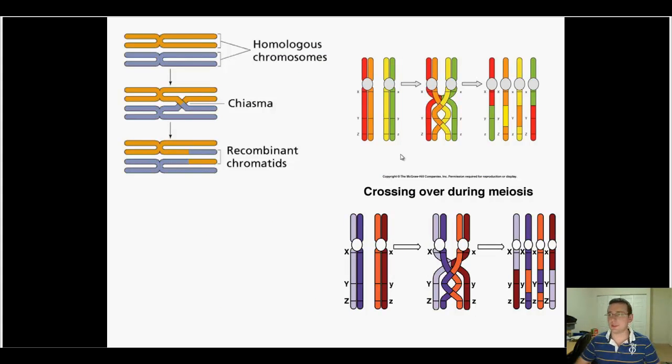Crossing over leads to genetic variation. You see here two different views of the same thing, which is crossing over. It all starts with those homologs pairing up next to each other.